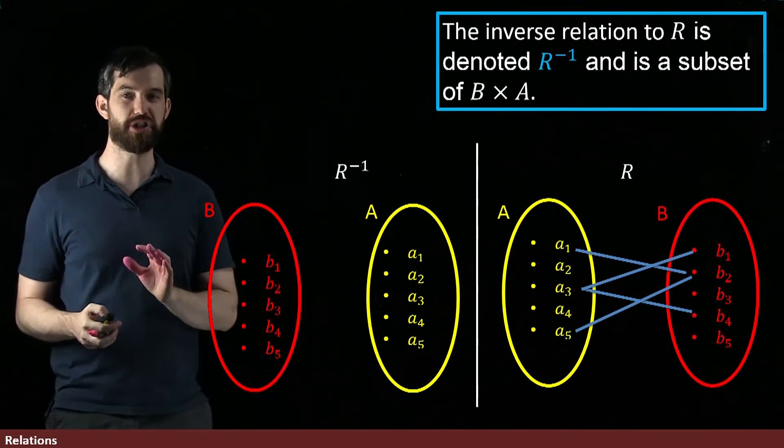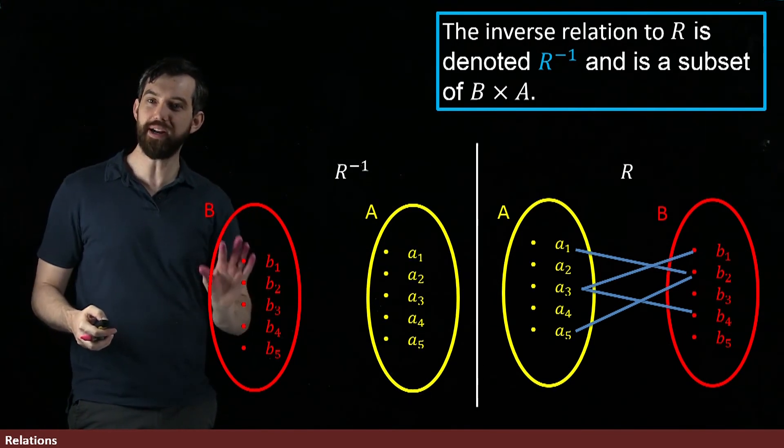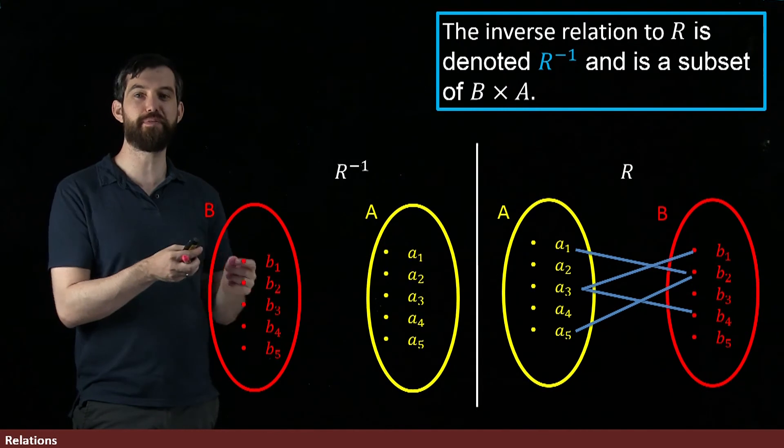...but for the inverse relation, first of all, the starting set, your domain, if you will, is the B. Your co-domain is the A, so we flip that order.